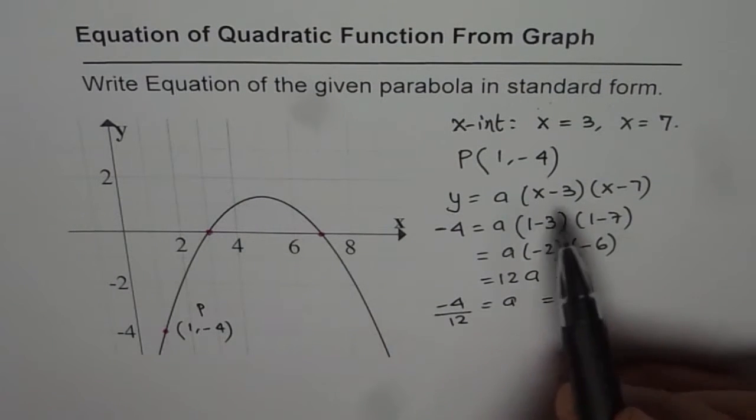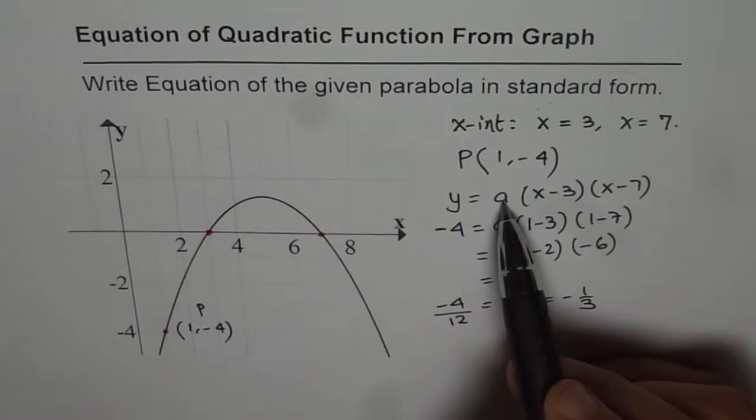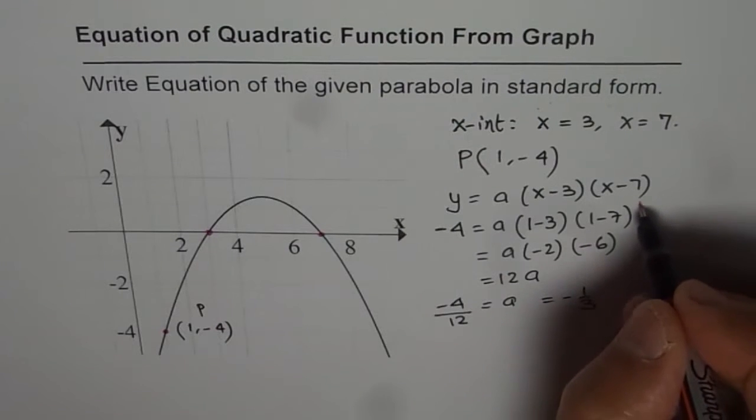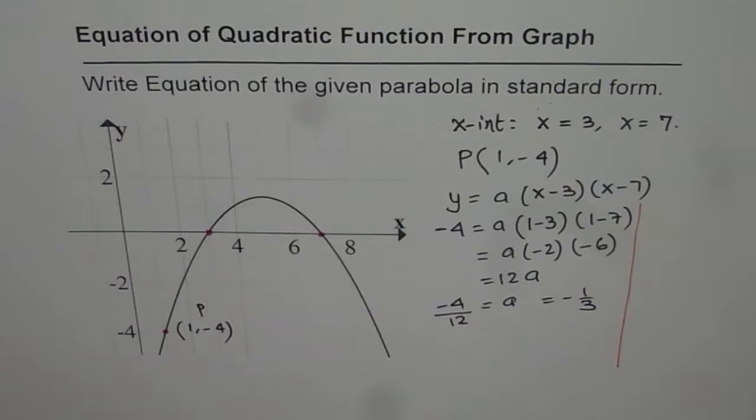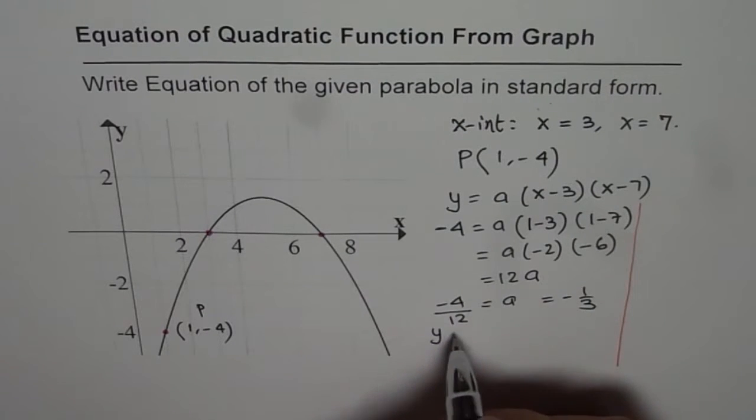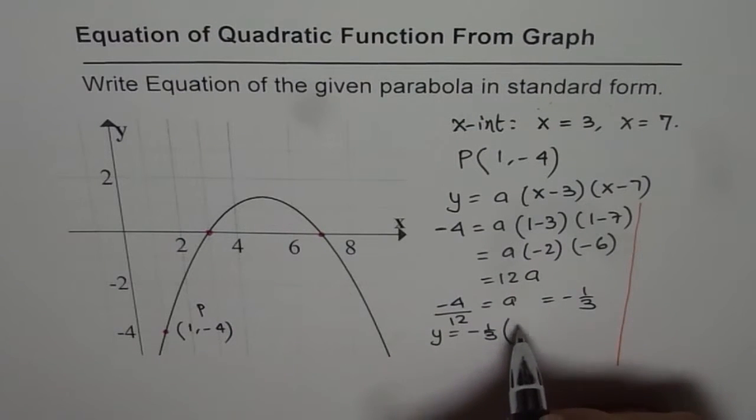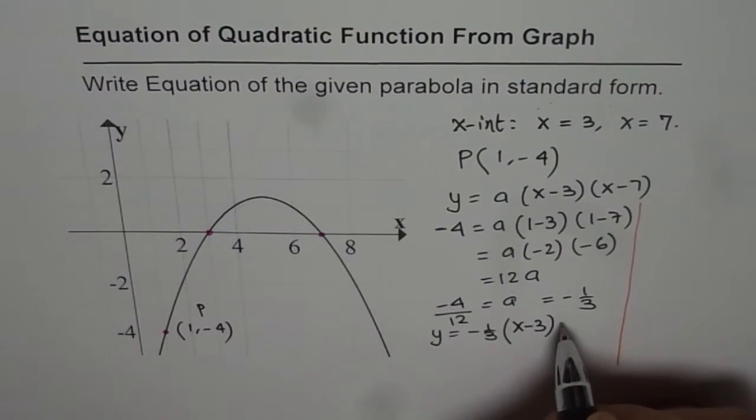Now since a is -1/3, we can write this here. So we get our equation as... First let me write the equation right here. y = -1/3, I am substituting -1/3 in the equation, times (x - 3)(x - 7).